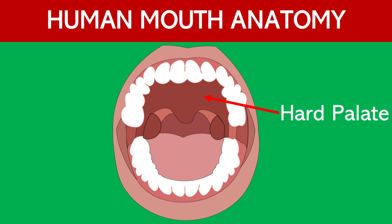Hard palate. The hard palate forms the roof of the mouth and separates the oral cavity from the nasal cavity. It provides a rigid surface against which the tongue can press food during chewing.